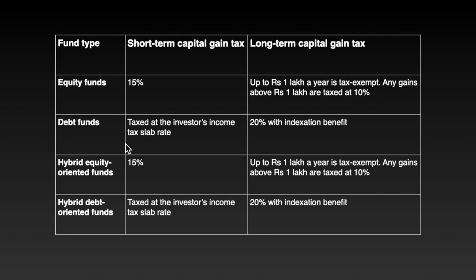In this case, if you have a short-term capital gain tax, you will have income tax as per slab. If you have income tax as per slab, that means you add income tax to the slab rate. As for long-term capital gain tax on debt funds, you will have 20% with indexation benefit — that is the example with indexation benefit.